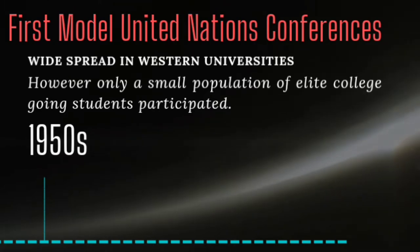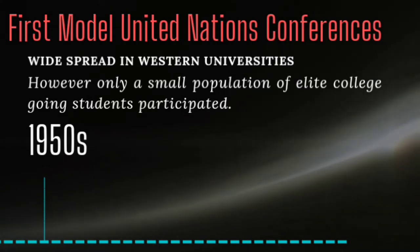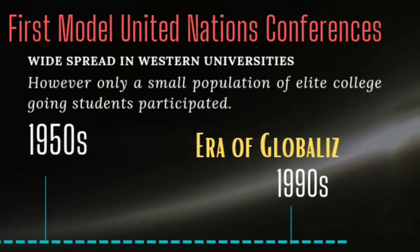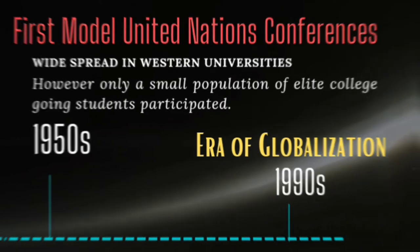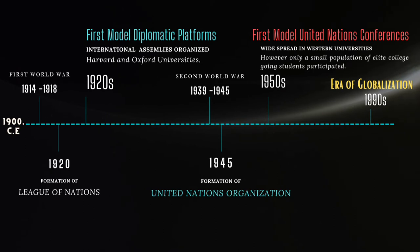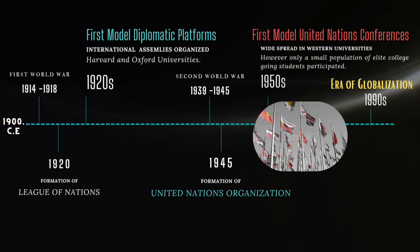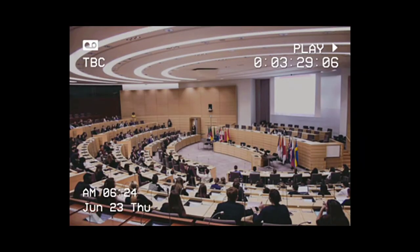The concept was now more open than ever but still catered only to a small college-going population of these developed nations. This changed in the 1990s when rapid globalization and cultural exchange finally spread the concept of Model UN to the rest of the world. Countries like Singapore, Brazil, and India, among others, began organizing model UN conferences in their schools and colleges, helping the skills associated with these conferences reach millions more over the years.